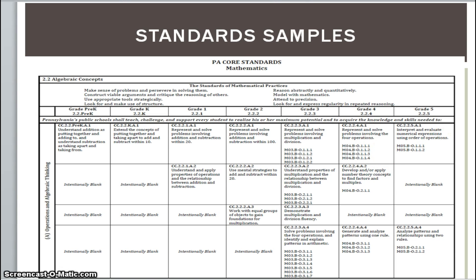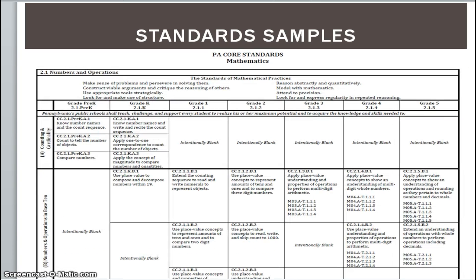The standards go K-5 and then 6 through 12 in two separate documents. Here is a sample of numbers and operations in base 10, where some grades are intentionally left blank because students were not developmentally ready. Students in kindergarten should be able to use place value to compose and decompose numbers within 19, all the way up to grade 5, where they apply place value concepts to show understanding of operations and rounding as they pertain to whole numbers and decimals. These are further defined into competencies in our curriculum as well.